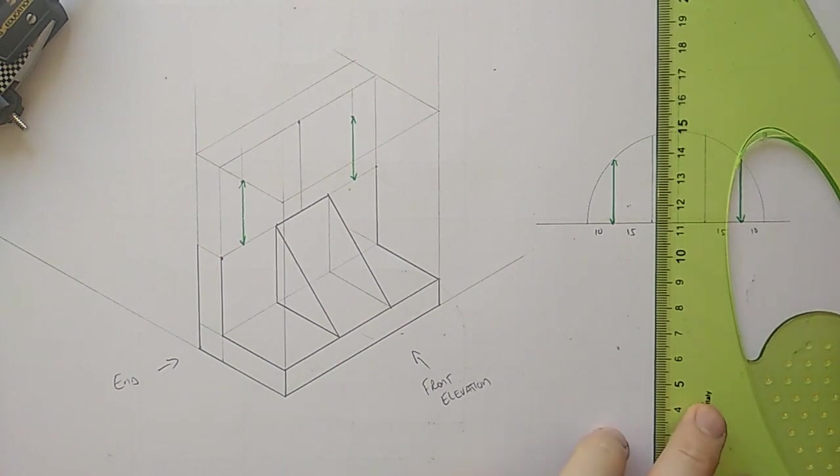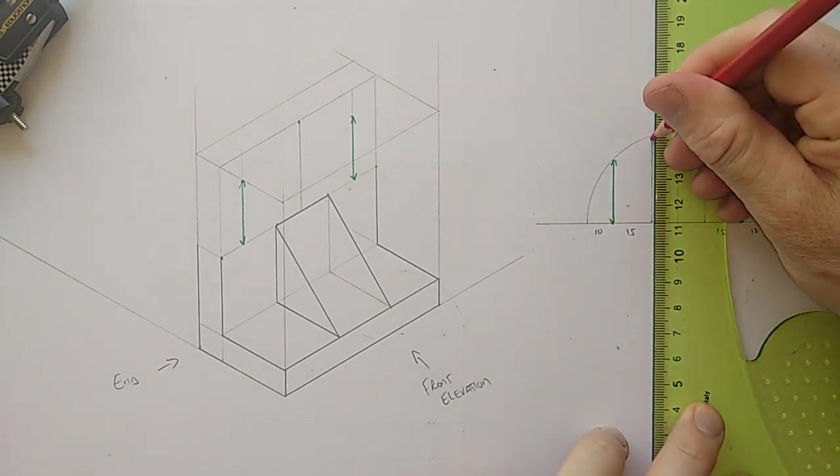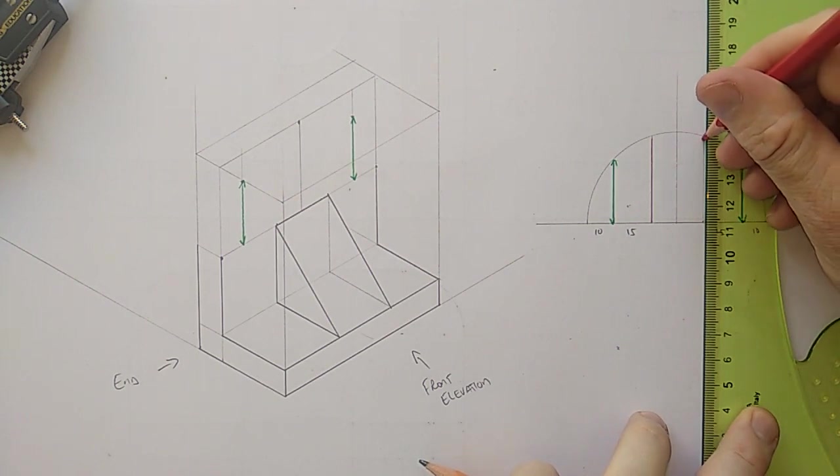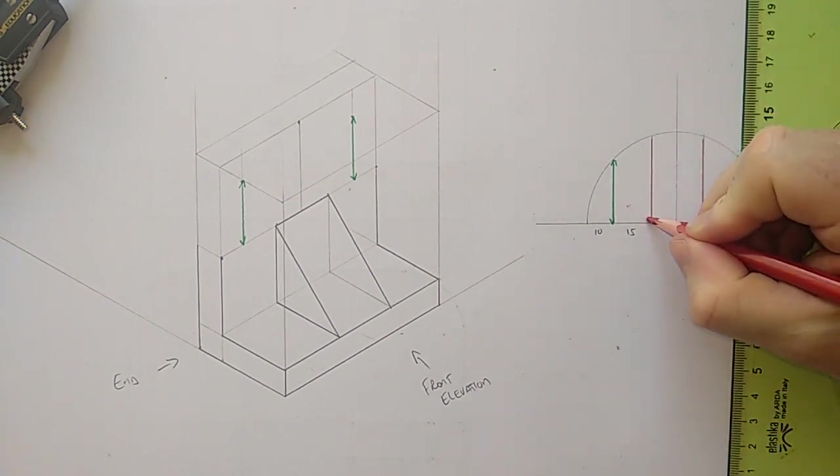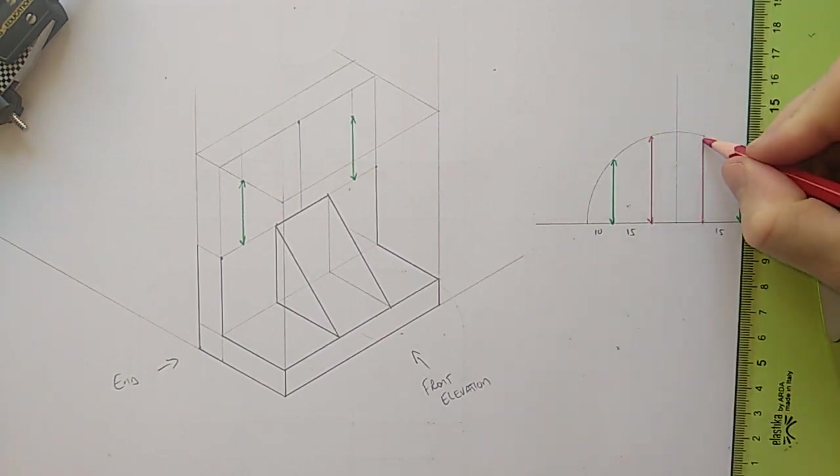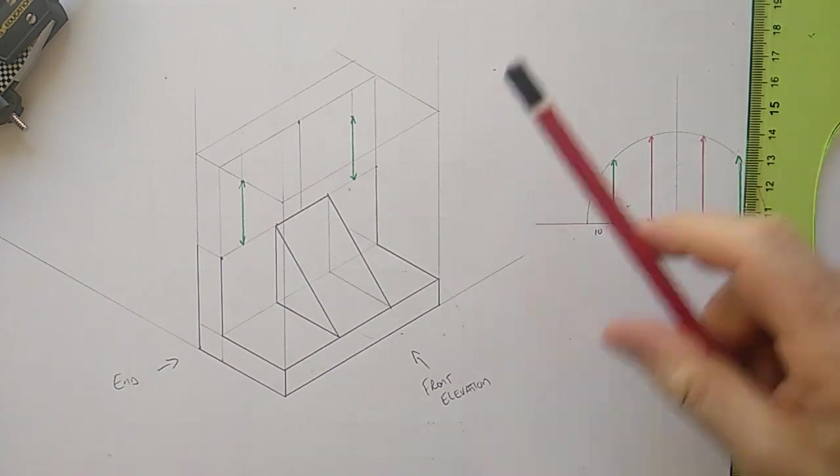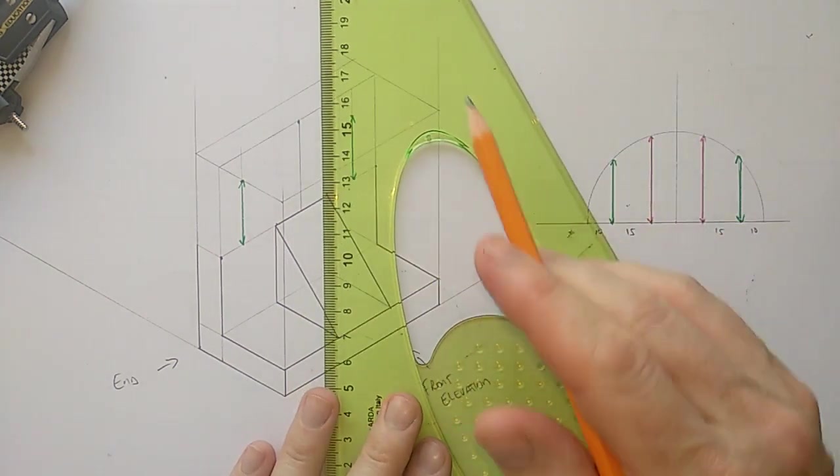Always make sure your t-square is sitting happily. So, of course, the distance here is the distance here. And that's coming up from these points.